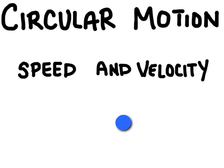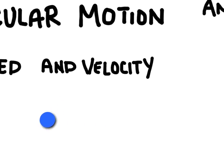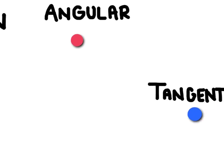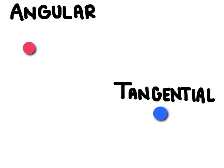In this video we're going to talk about circular speed and velocity. There are two types of speed when we're talking about objects traveling in circular motion. The first is angular, which is essentially just how quickly the object is moving in a circle.